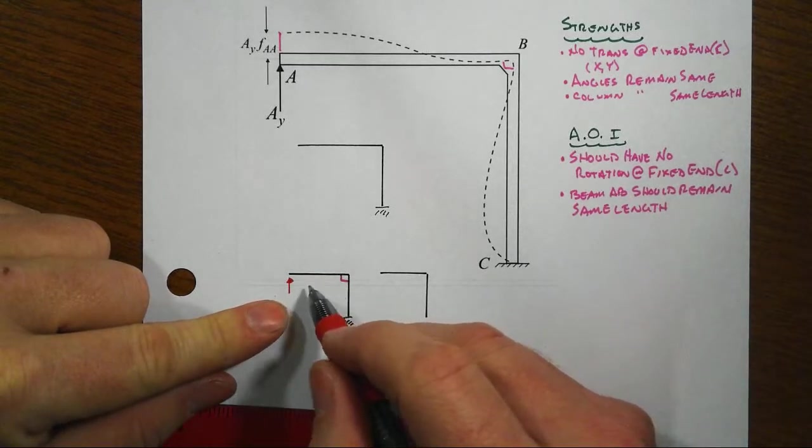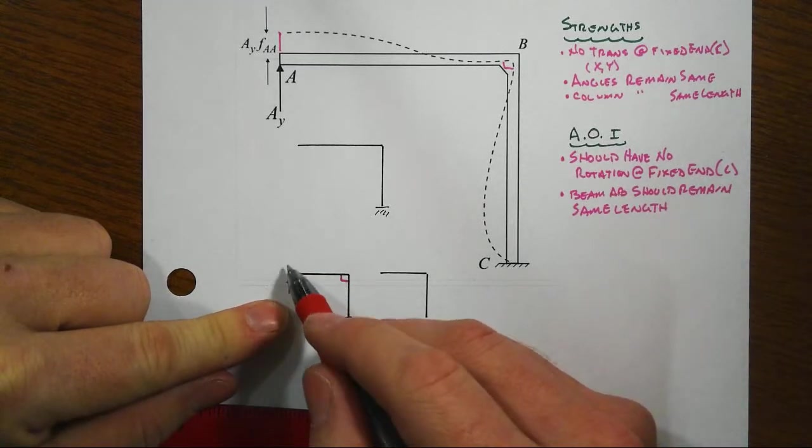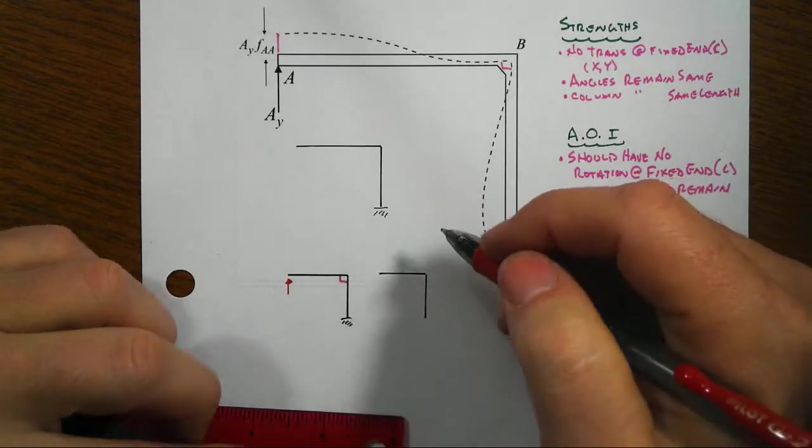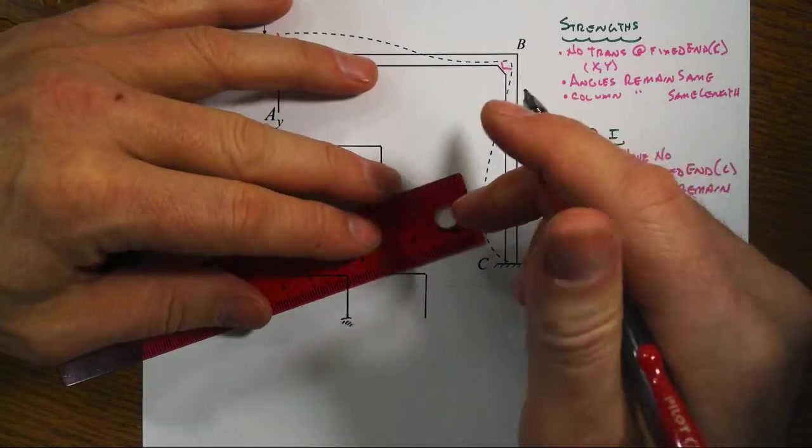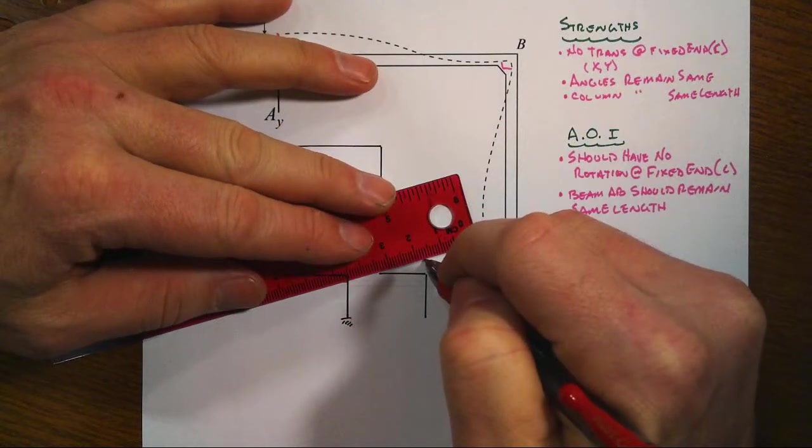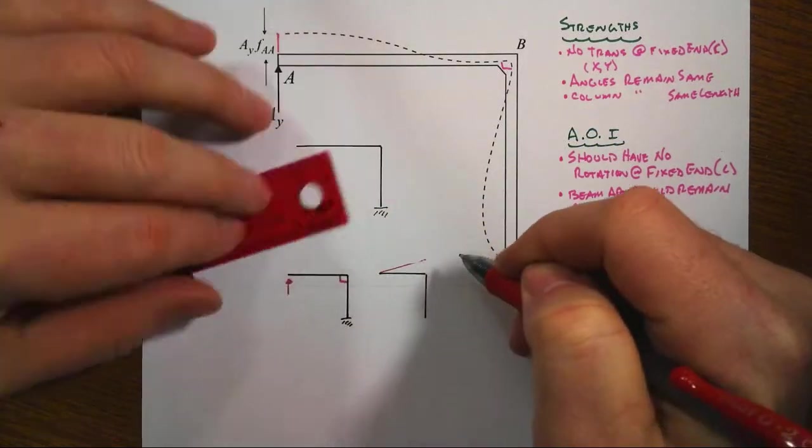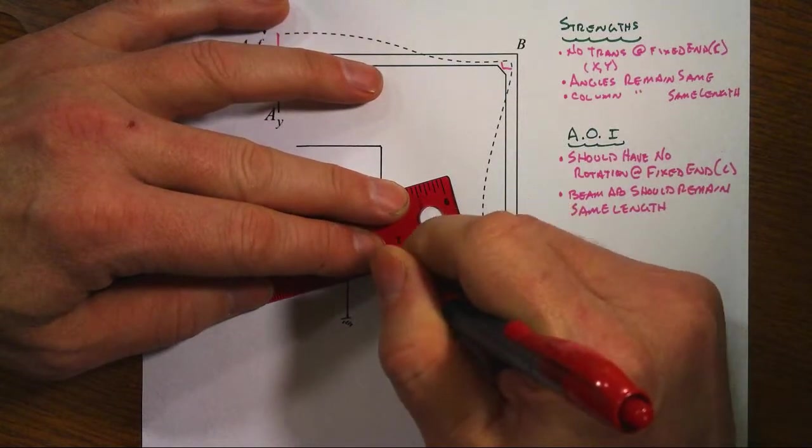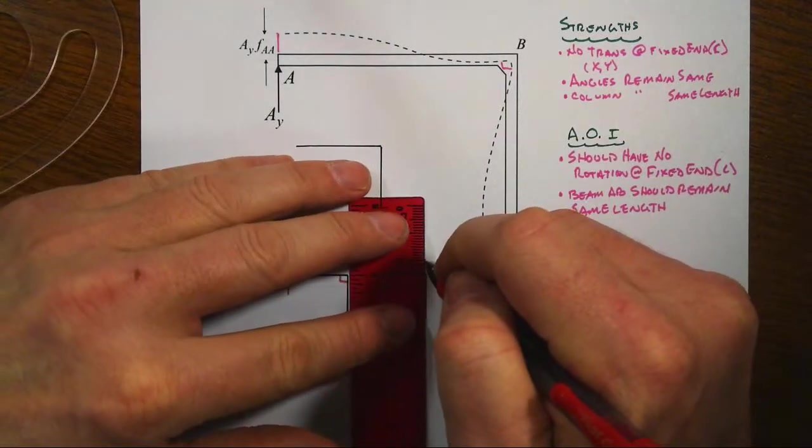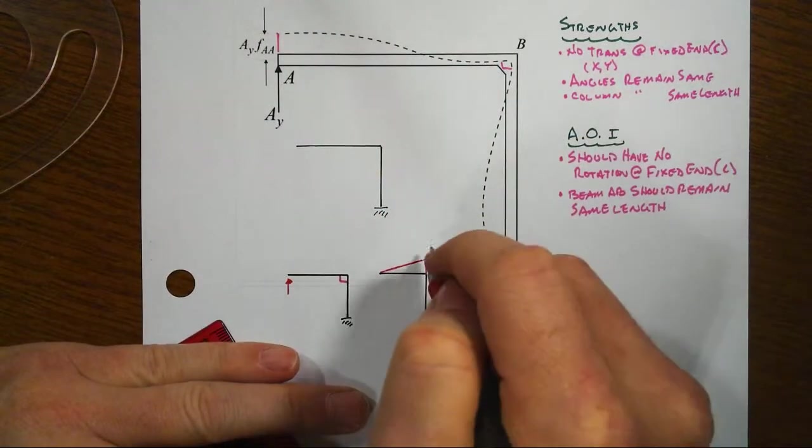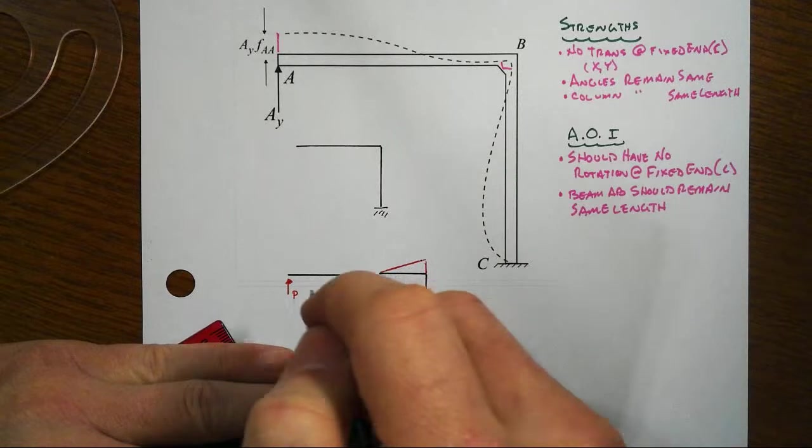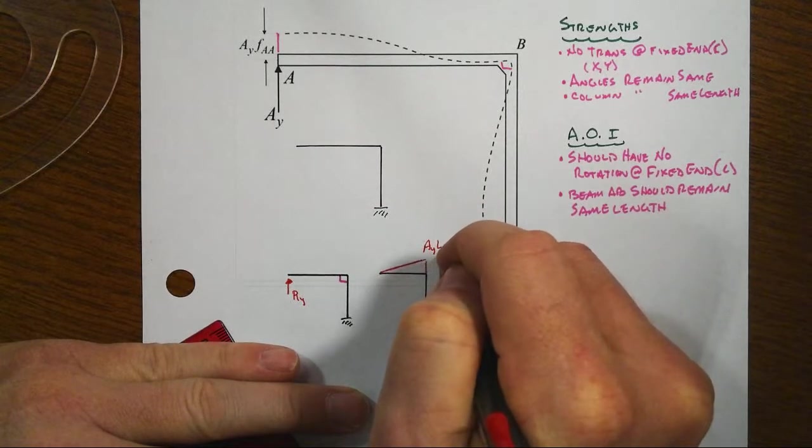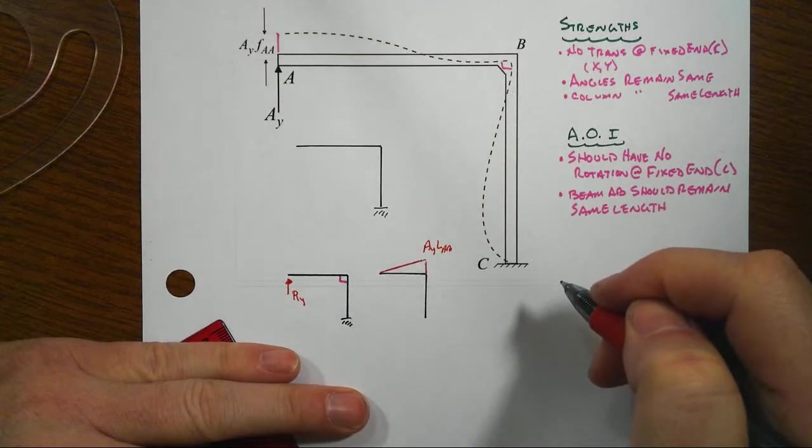When we take a look at this cantilever segment here, and we're pushing up, it's going to want to make this thing then arc upwards, and the moment diagram that would go with that cantilever with that point load at the end would just be this linear increase in the moment. And that would, if this were P, and I guess we've called it AY, so we'll call it AY, that would be AY times the length of AB would be the magnitude of that.